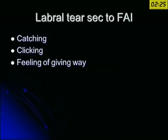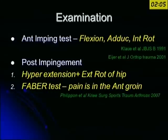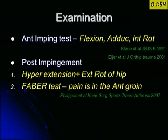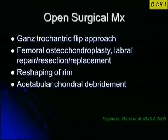Classical features of a labral tear include catching, clicking, or a giving-way sensation. The classical examination test is flexion, adduction, and internal rotation of the hip, which reproduces the same pain the patient is suffering from. If there is posterior impingement, you bring the patient to the edge of the table, hyperextend the hip, and give a small external rotation, trying to impinge the posterior aspect of the head against the posterior part. The FABER test — flexion, abduction, external rotation — is also useful, though it is more specific for sacroiliac joint pathology.